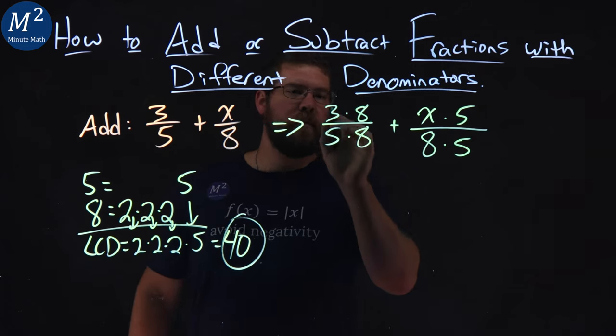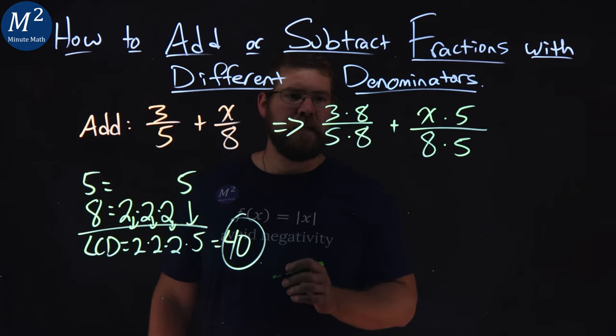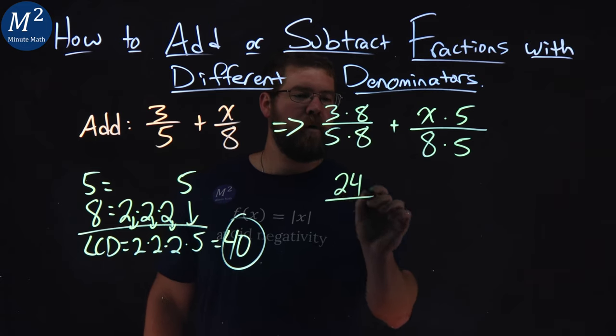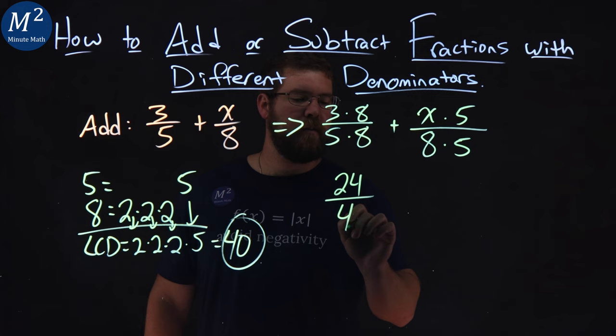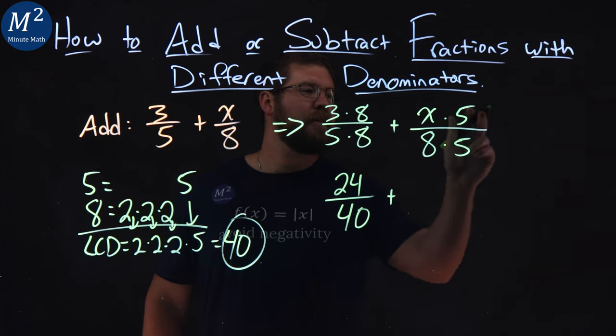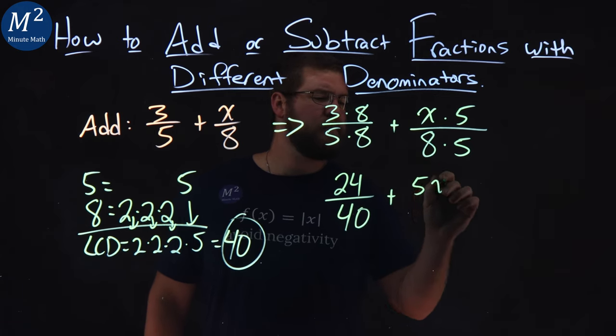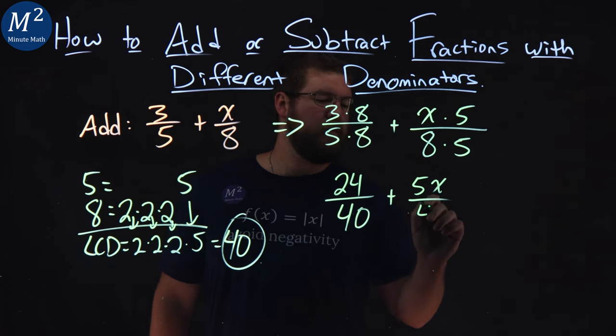Let's go rewrite this out. Three times an eight is a 24, over five times eight, which is a 40, like it's supposed to be. x times five is a 5x, and eight times five is a 40.